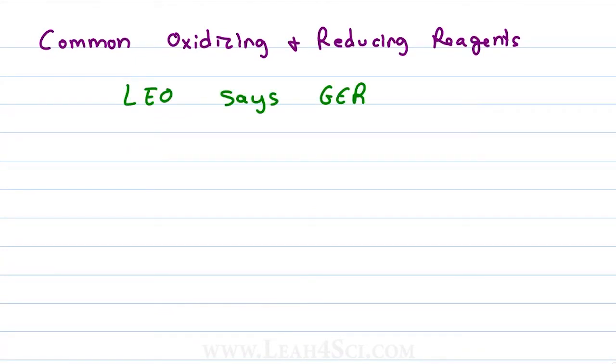From the mnemonic Leo says Ger, we know that something that has a loss of electrons is going to be oxidation and a gain of electrons is reduction, but I want you to take that a step further.